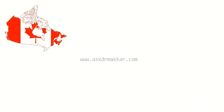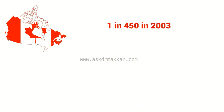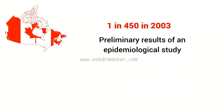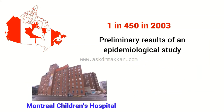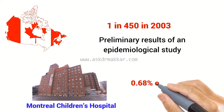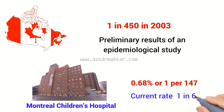Canada: the rate of autism diagnoses in Canada was 1 in 450 in 2003. However, preliminary results of an epidemiological study conducted at Montreal Children's Hospital in the 2003–2004 school year found a prevalence rate of 0.68%, or 1 per 147. The current prevalence rate is estimated to be 1 in 66.